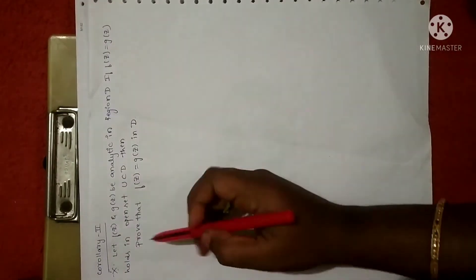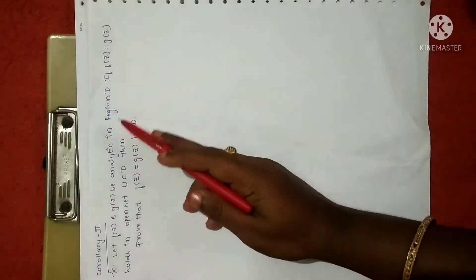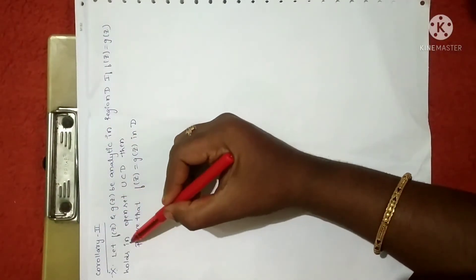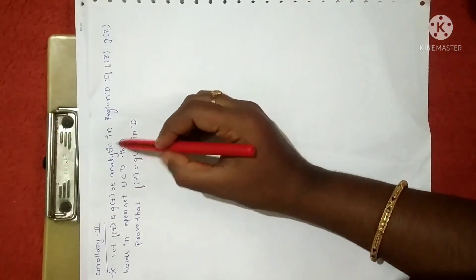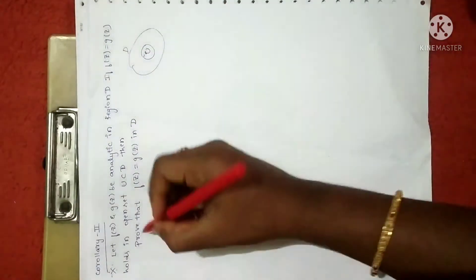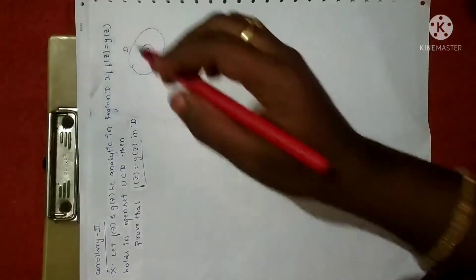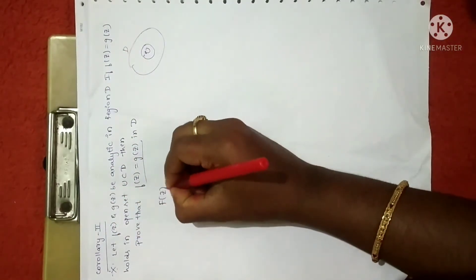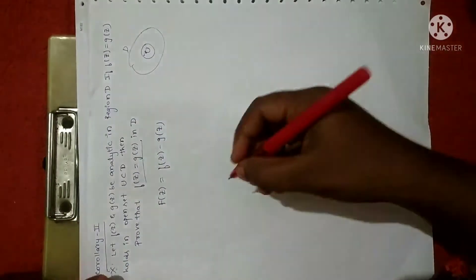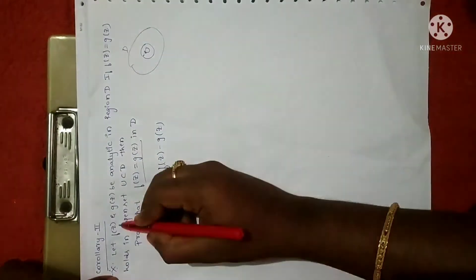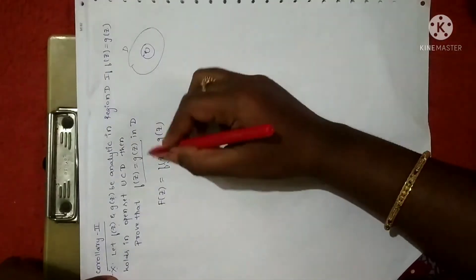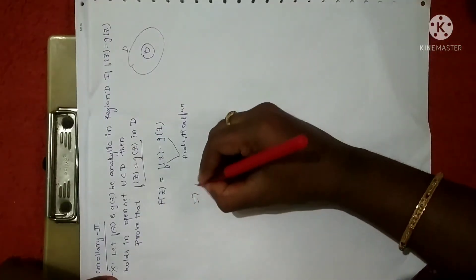Here is the second corollary. The statement is: if f(z) and g(z) are analytical in region D, and f(z) = g(z) holds on an open set U which is a subset of D, then we have to prove that f(z) = g(z) throughout D. Again, define a function F(z) = f(z) - g(z). Since both f(z) and g(z) are analytical, their difference is also analytical, so F(z) is analytical in region D.